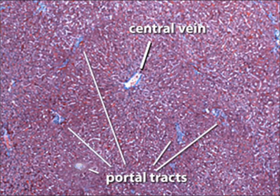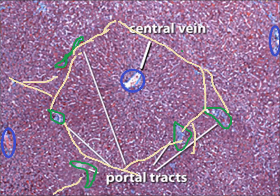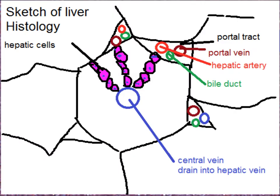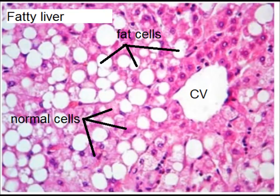The liver is organized into roughly hexagonal lobules. Liver cells are arranged in one- or two-cell-thick cords. There is a central vein and portal tracts containing the portal vein, hepatic artery, and bile duct. The central vein drains into the hepatic vein.